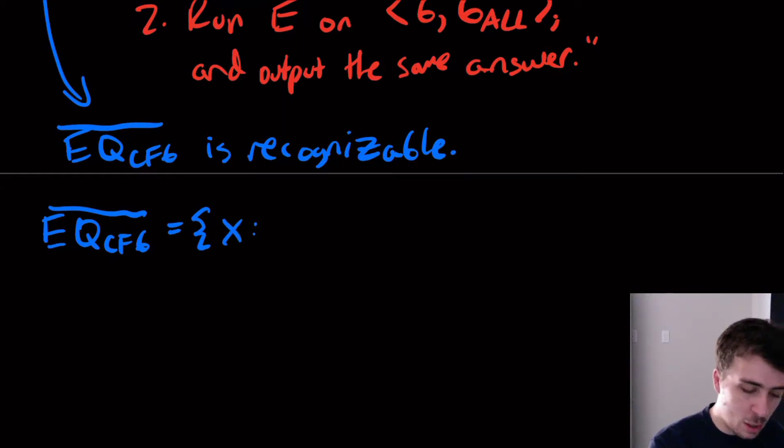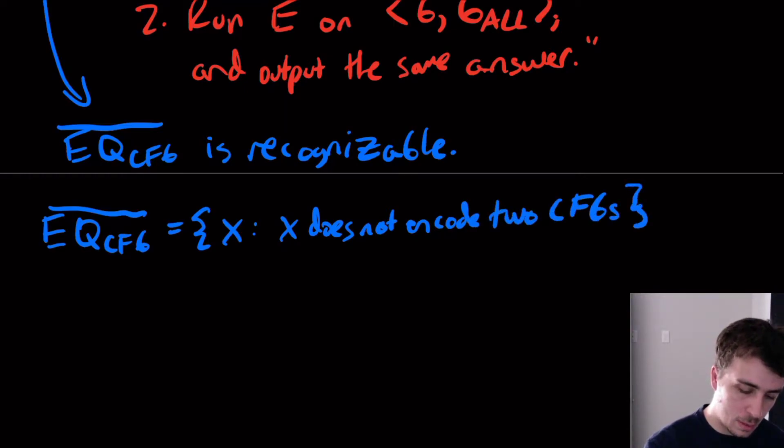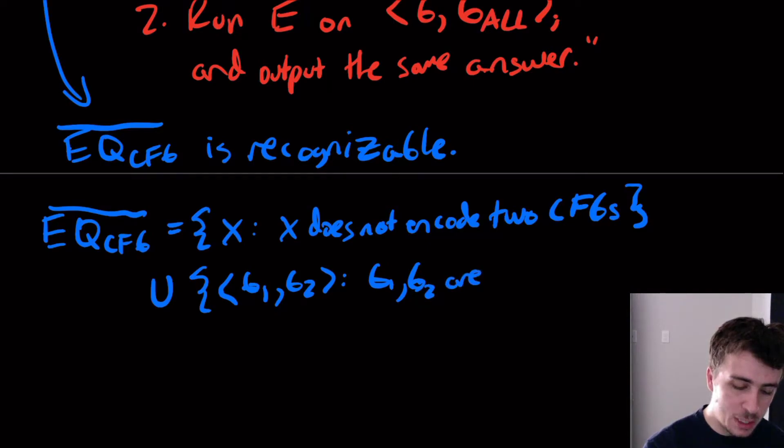So all the strings, that means X where X does not encode two CFGs, and then union that with the pairs G1, G2 where these two things are CFGs but they don't have the same language.